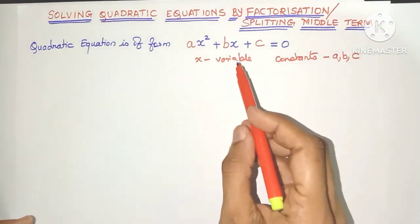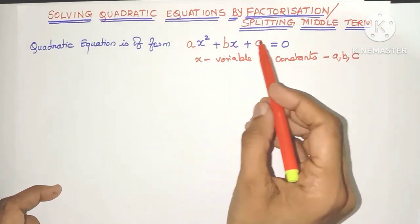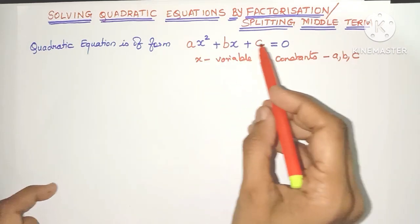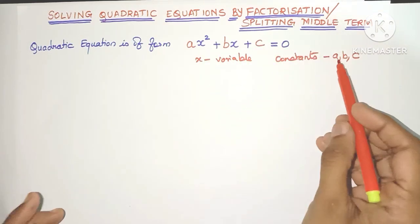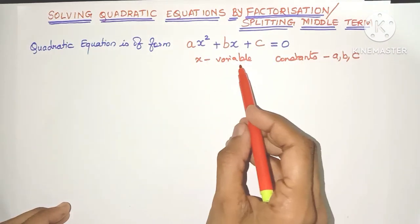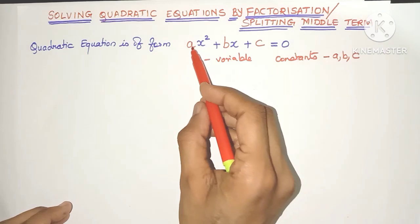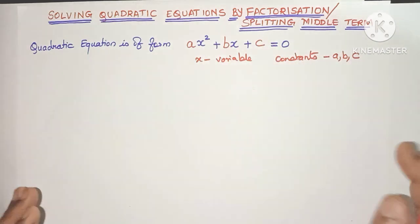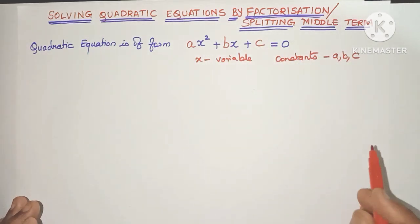Any quadratic equation can be written in the form ax squared plus bx plus c equal to 0, where x is the variable and a, b and c are constants.